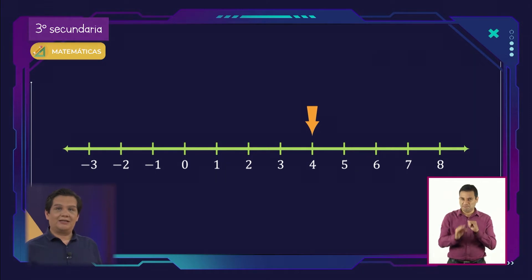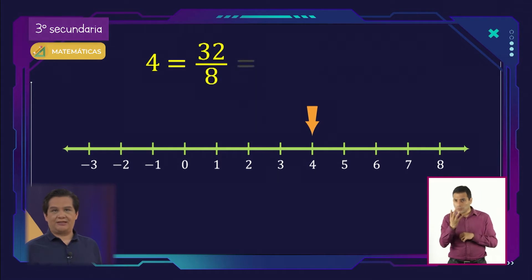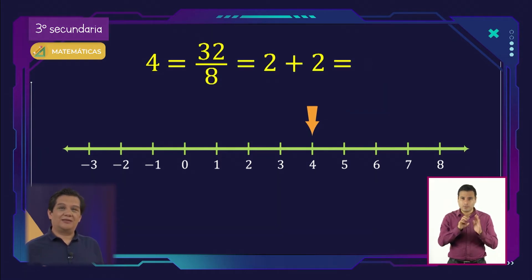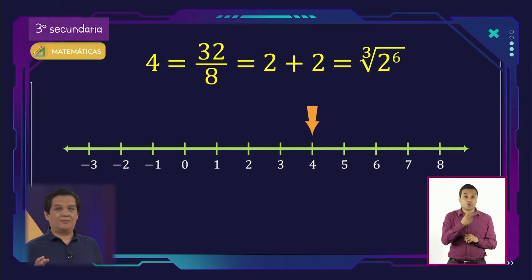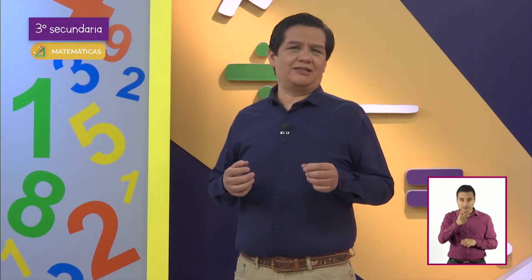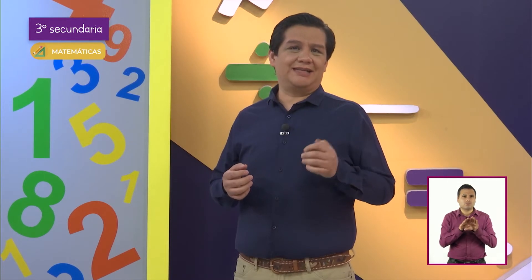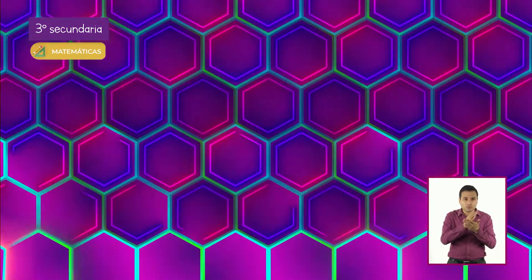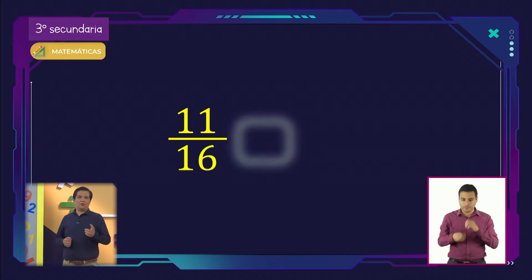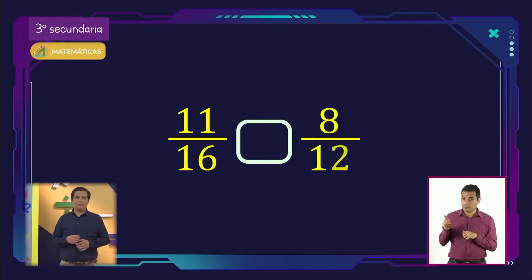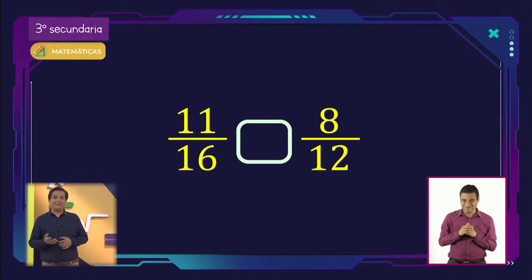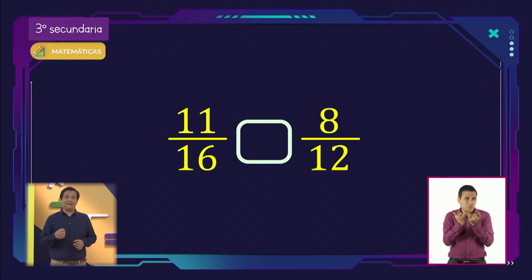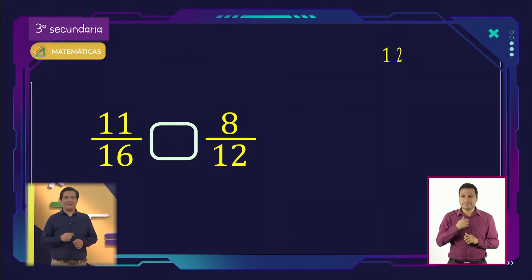Y finalmente está la igualdad, en donde 4 es igual a 4, sin importar cómo esté representado. Por ejemplo, 32 octavos es igual a 2 más 2, e incluso igual a la raíz cúbica de 2 elevado a la sexta potencia. Pero, ¿cómo se conoce la relación entre dos fracciones si la representación gráfica no es suficiente? Por ejemplo, en los números 11 dieciséisavos y 8 doceavos, se tienen fracciones equivalentes con el mismo denominador. De este modo, la comparación depende de los numeradores.